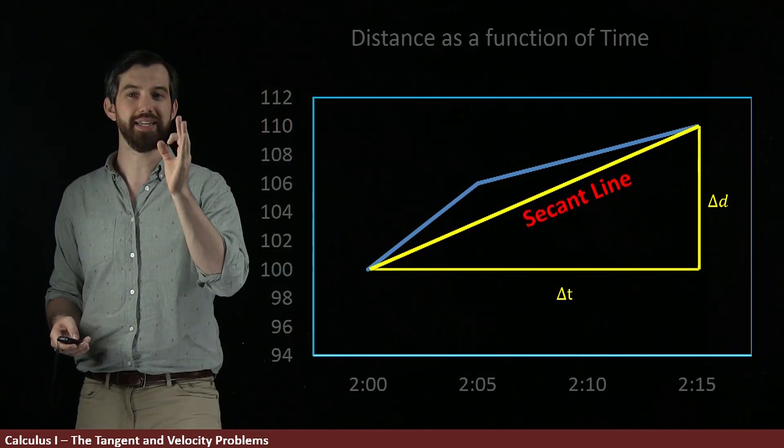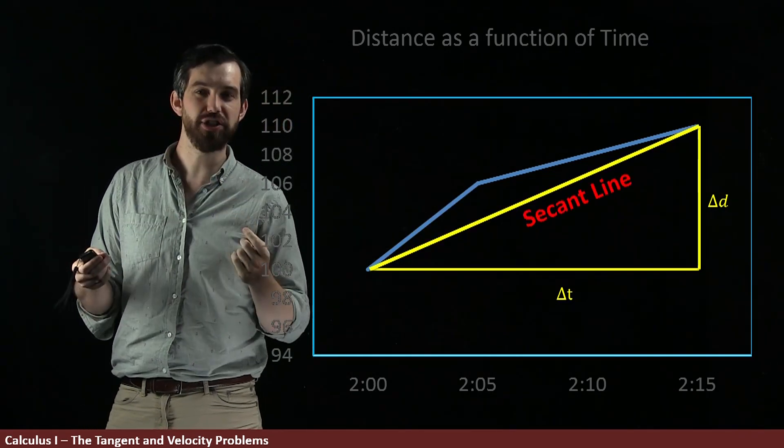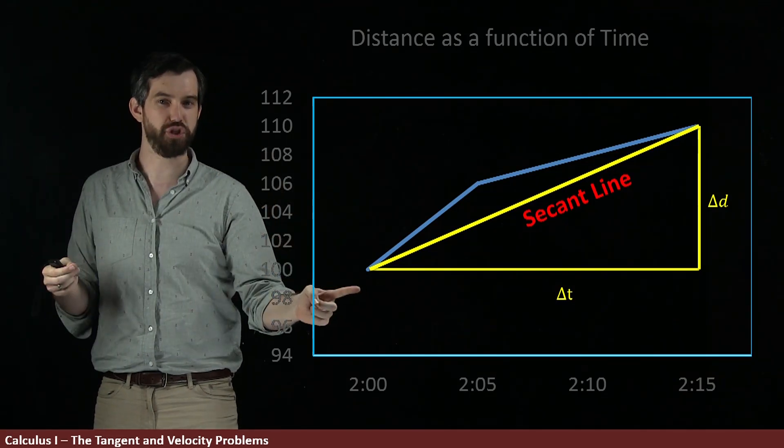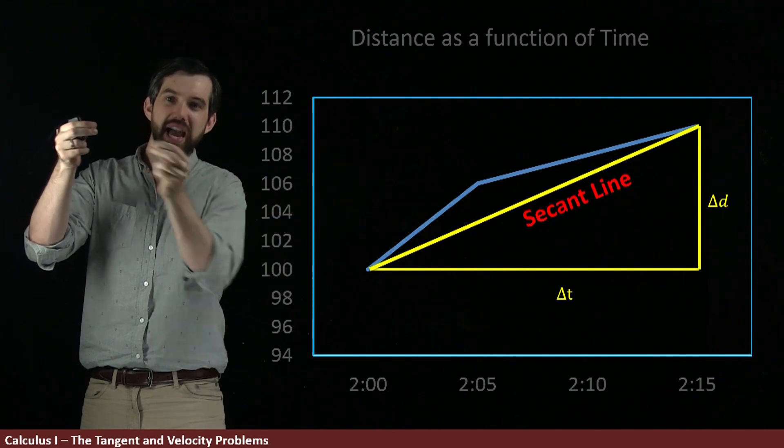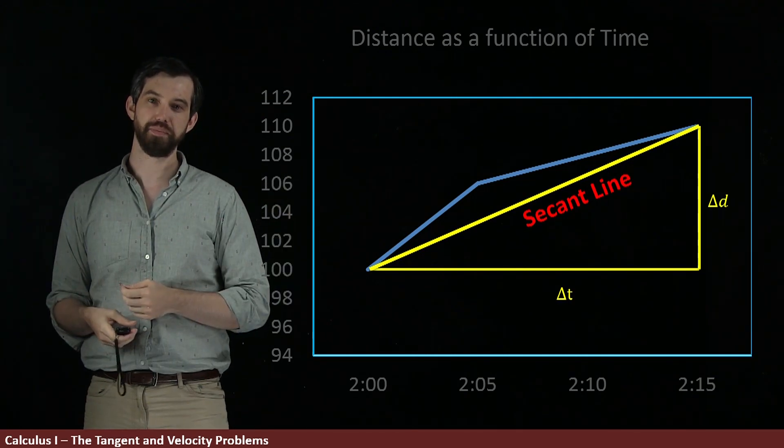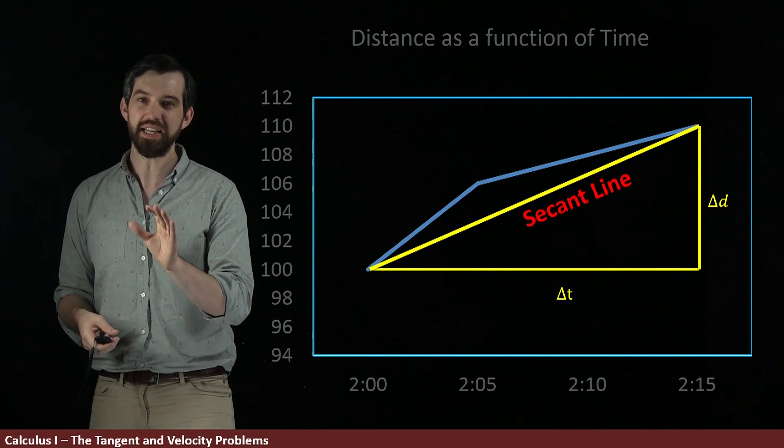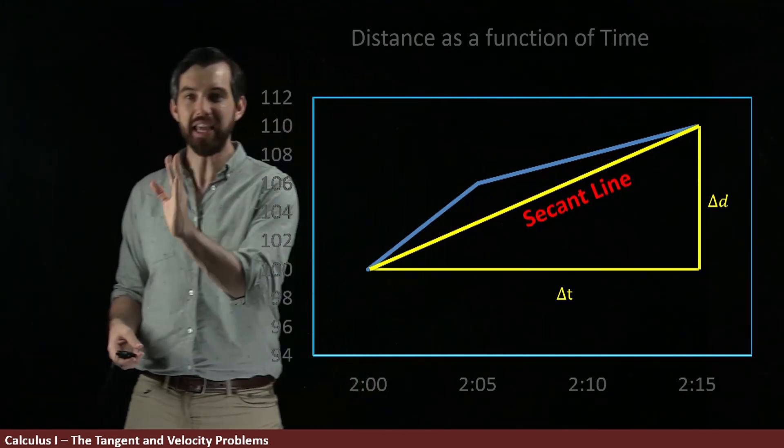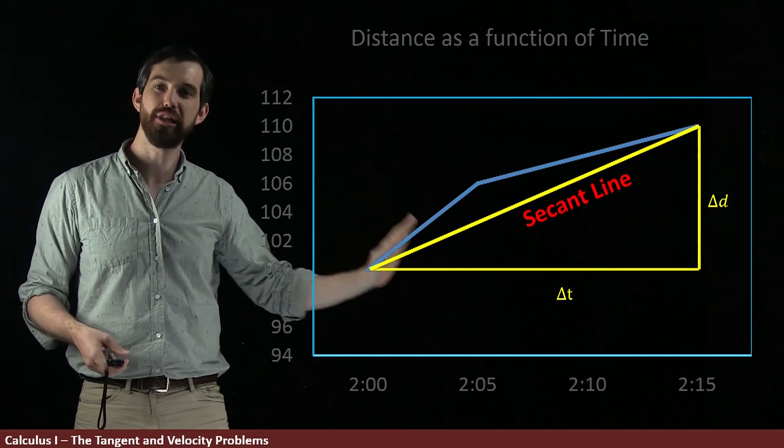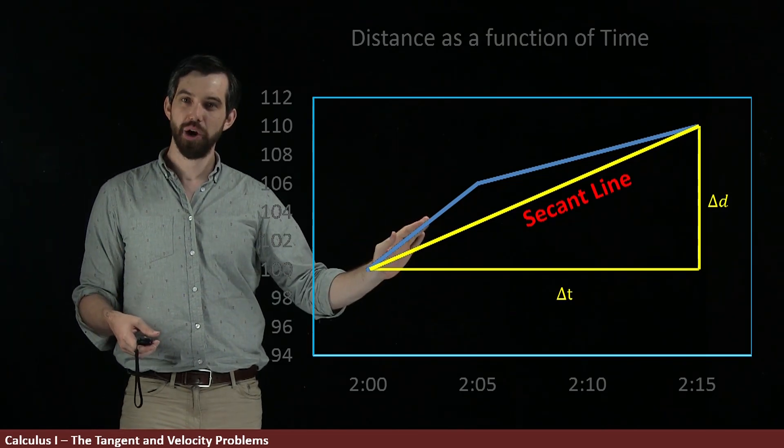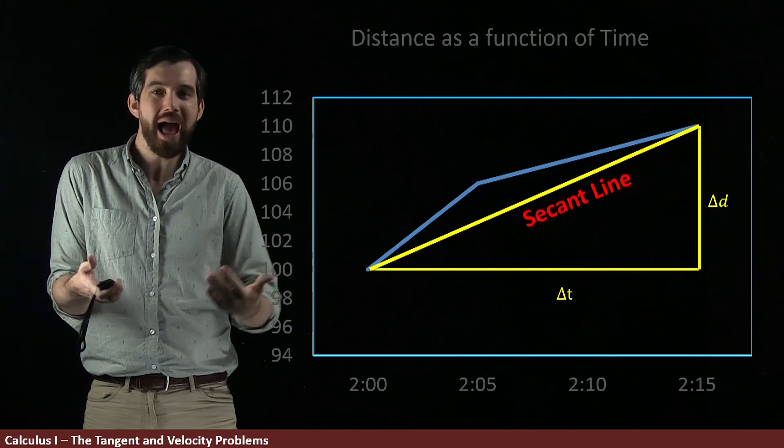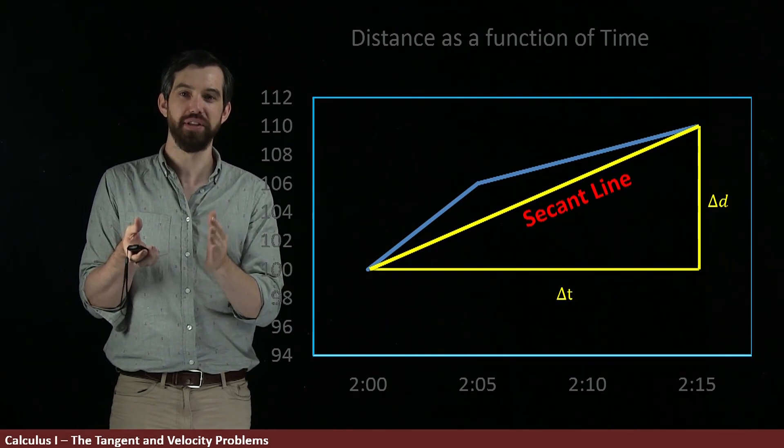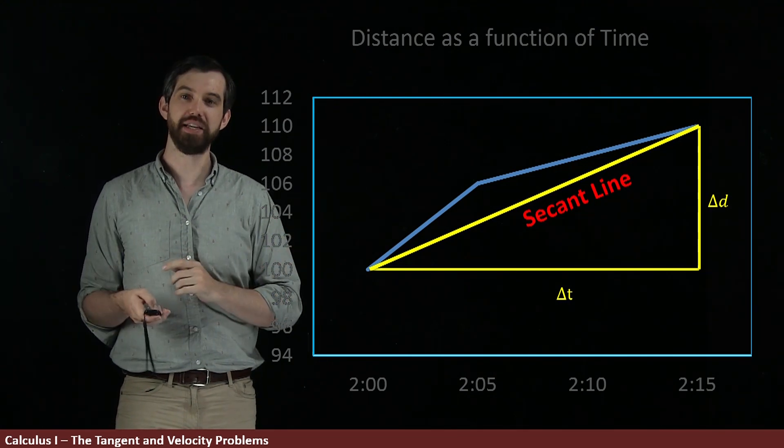And this line we call a secant line. A secant line is just if you have some curve and you have two points on it, for example, this point at 2 o'clock and 2:15, a secant line is a straight line between those two different points. And then what we've seen is that the average velocity over this entire graph is just the slope of the secant line. Regardless of what the actual graph is, regardless of how the actual car moves, its average velocity over this interval is the same thing as the slope of the secant line.